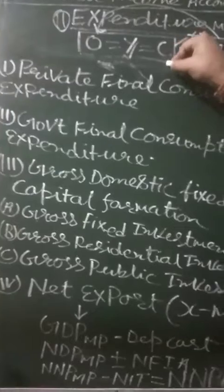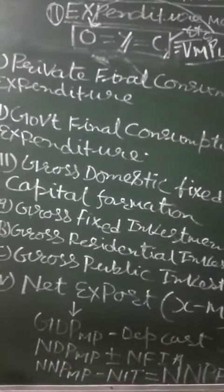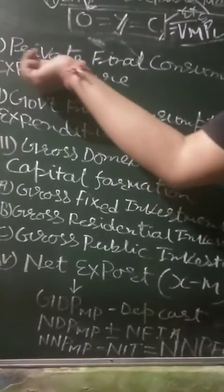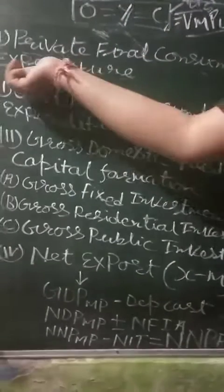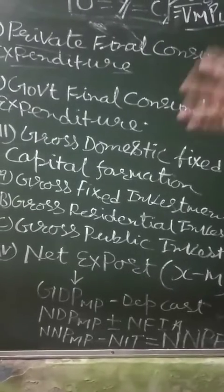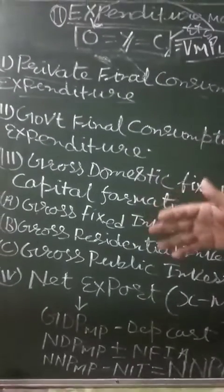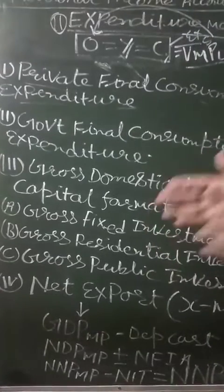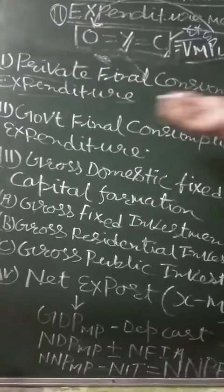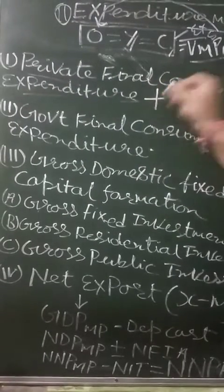E equal to Y equal to C — that is how we look at the income method. Now, for the expenditure method, there are four items we have to add. The first item is private final consumption expenditure. As we know, our economy is a mixed economy with the existence of both public sector and private sector household sector, so we add the amount attributed to private final consumption expenditure.